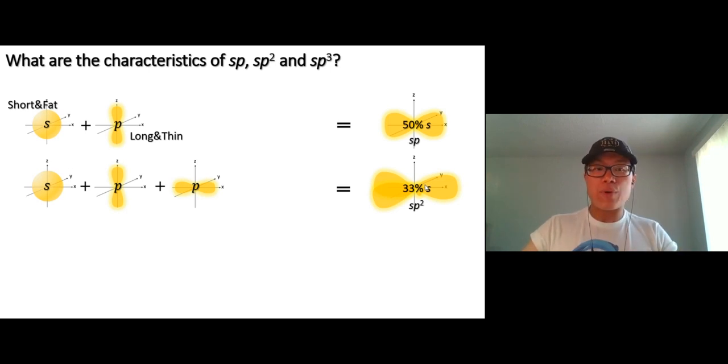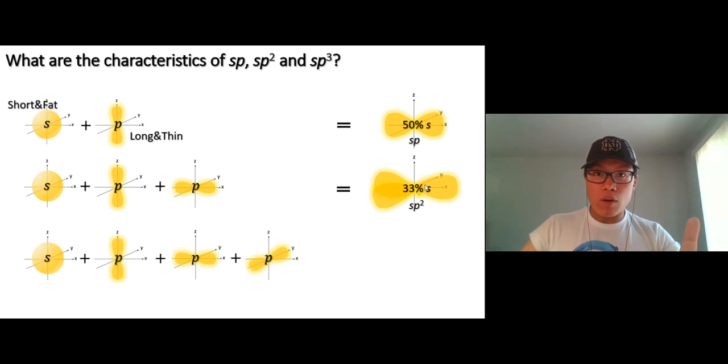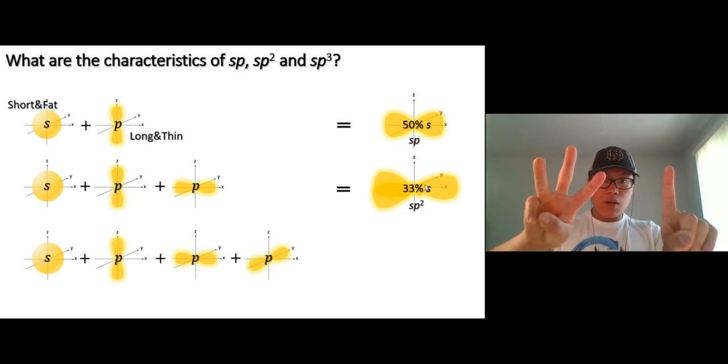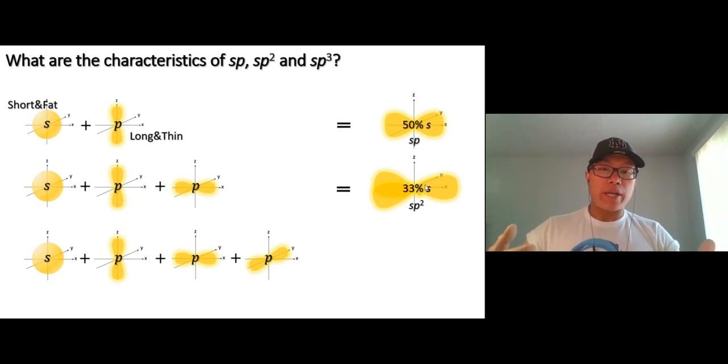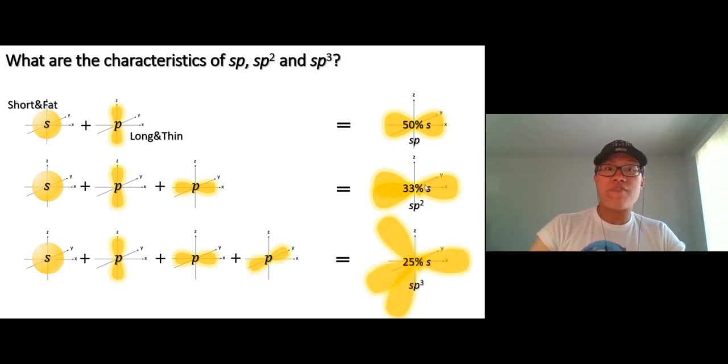One more time, if you don't really get what I mentioned. If I mix one S orbital and three P orbitals, what does the offspring look like? Do they look more like S or look more like P? Even more toward P because we have more P there. If you do the math there, that's exactly 25% S and 75% P.